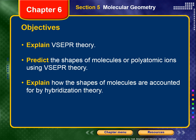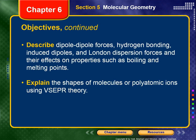In this video, I want you to be able to explain VSEPR theory, predict the shapes of molecules or polyatomic ions using VSEPR theory, explain how the shapes of molecules are accounted for by hybridization theory, describe dipole-dipole forces, hydrogen bonding, induced dipoles, and London dispersion forces and their effects on properties such as boiling and melting points, and explain the shapes of molecules or polyatomic ions using VSEPR theory.